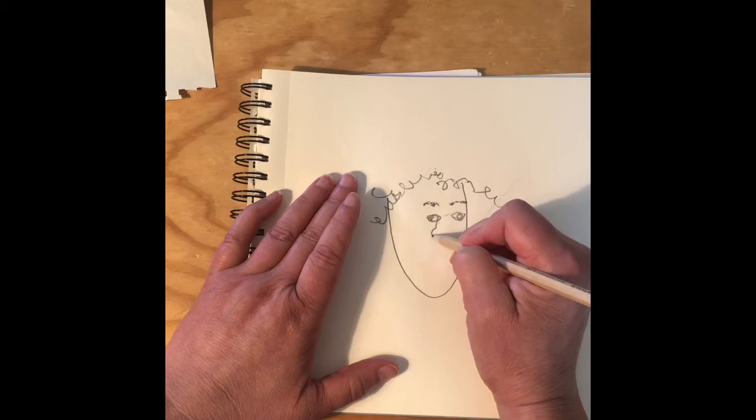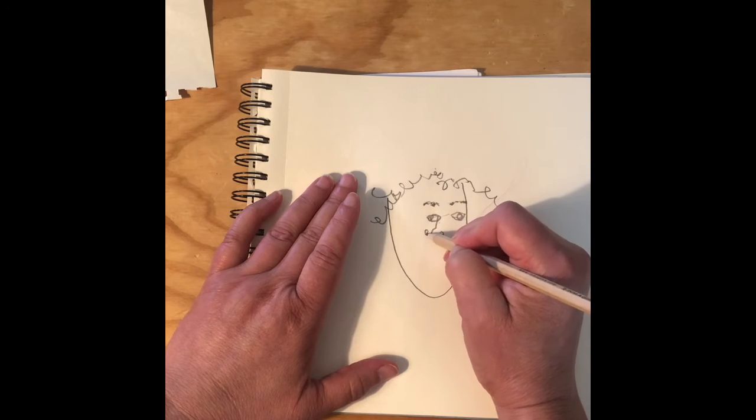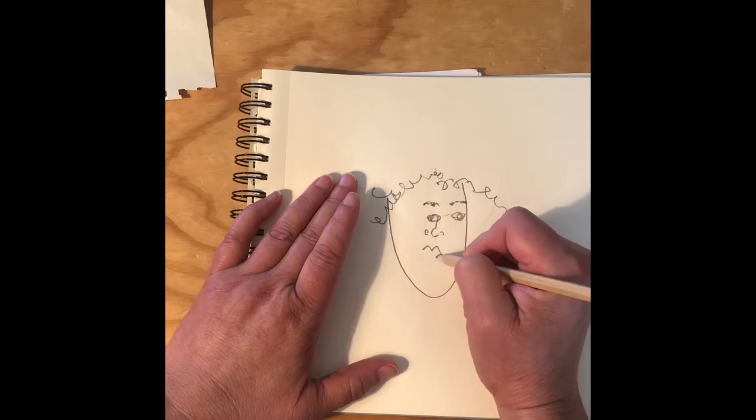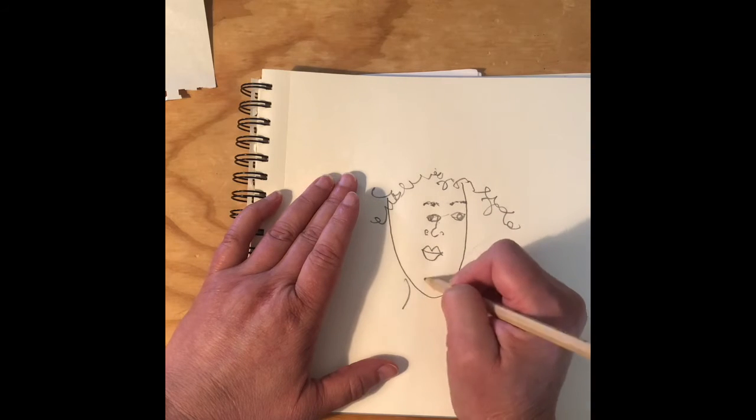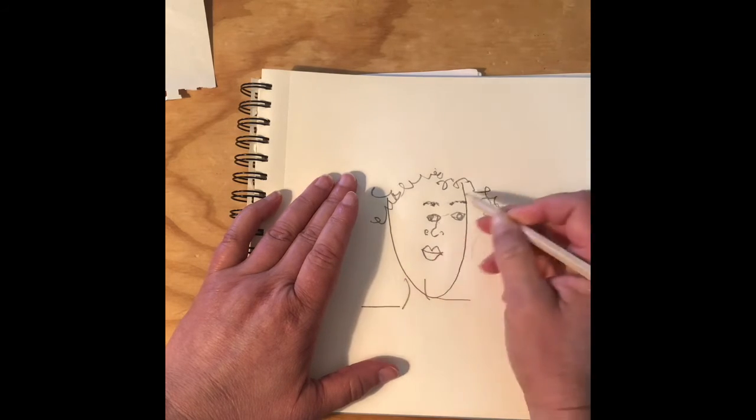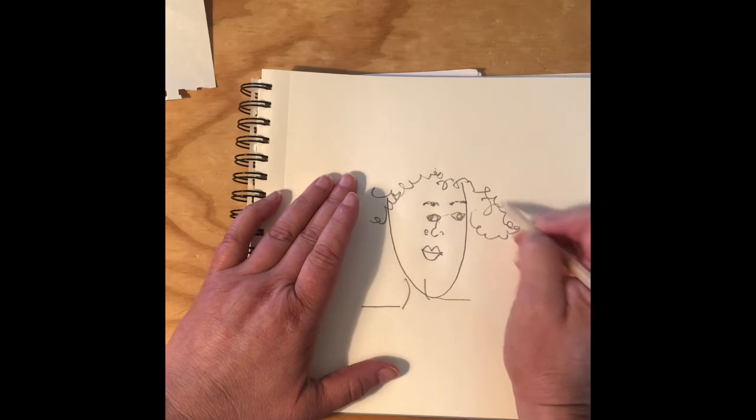A nose and a mouth. More hair, probably a neck and some shoulders. More hair.